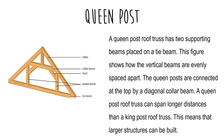Queen post. A queen post roof truss has two supporting beams placed on a tie beam. The vertical beams are evenly spaced apart. The queen posts are connected at the top by a diagonal collar beam. A queen post roof truss can span longer distances than a king post roof truss, which means that larger structures can be built.